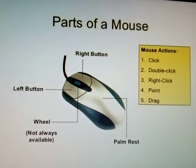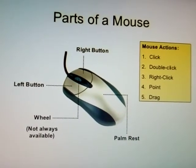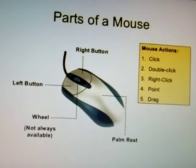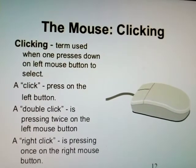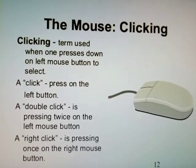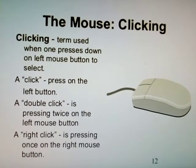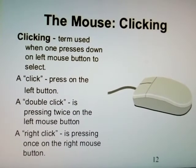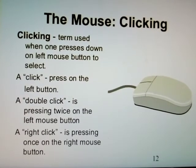Parts of the mouse include the right button and the left button. Clicking means pressing the left mouse button once. Double-click means clicking the left mouse button twice. Right-click means pressing the right mouse button.